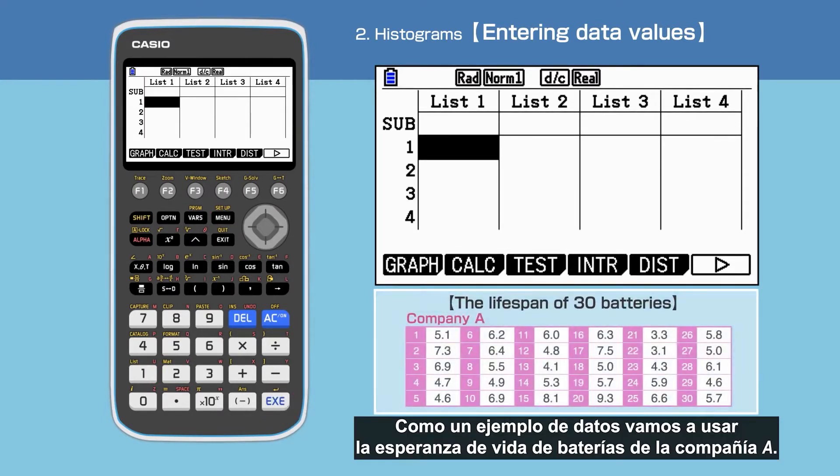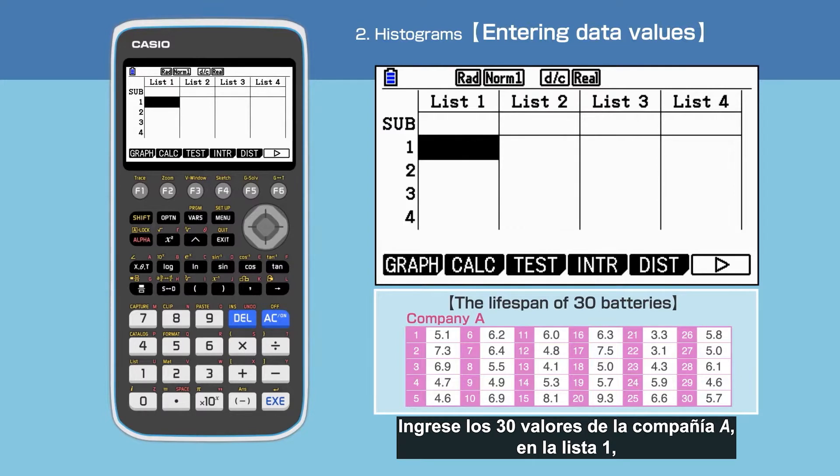As example data, we will use the lifespan of batteries of Company A. Enter the 30 data values for Company A in list 1.